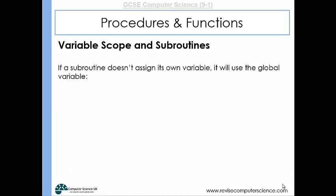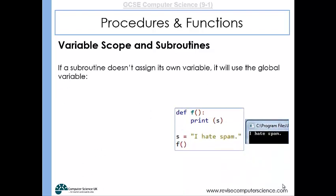If a subroutine doesn't assign its own variable, it will use the global variable. Here, no local variable is assigned inside function f — it just prints s, which was already declared and assigned the string 'I hate spam' before the function call. That's why it prints out the global variable, as shown in the example output.